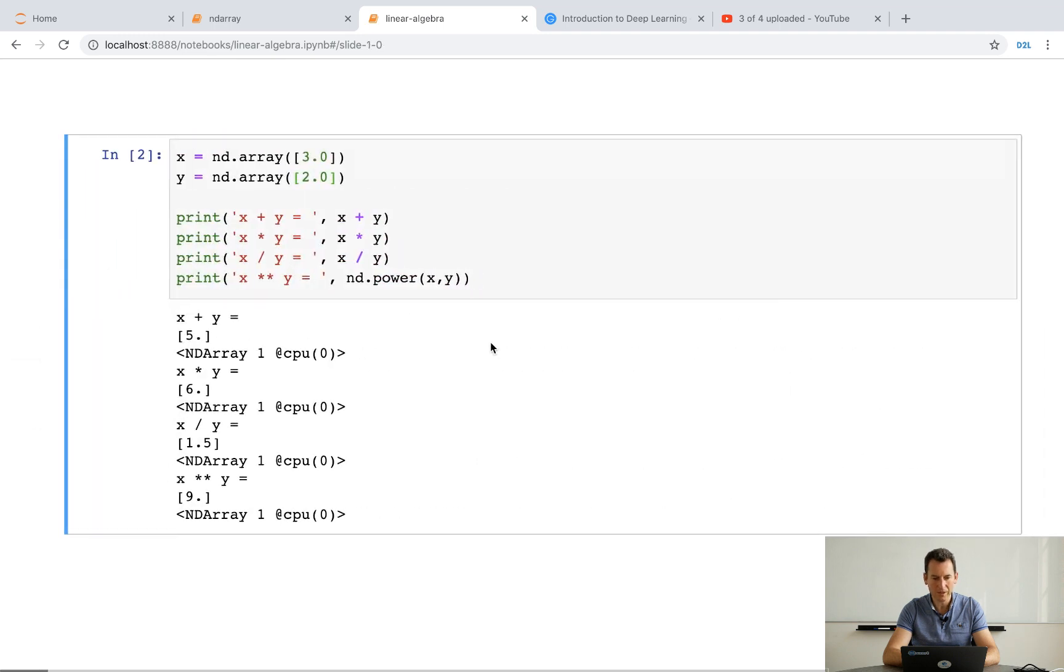Okay, so now that we've done this, let's actually create some of the most basic arrays. Namely, I could just go and create the array with an entry 2 and entry 3. If I do this, I can add them together, I can multiply them, I can divide them, or I can exponentiate them or anything else.